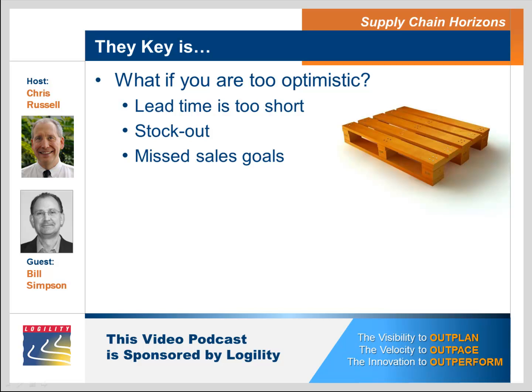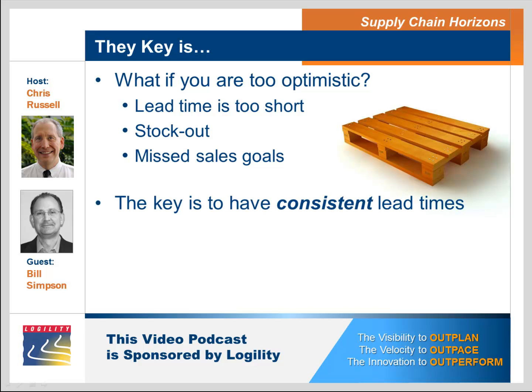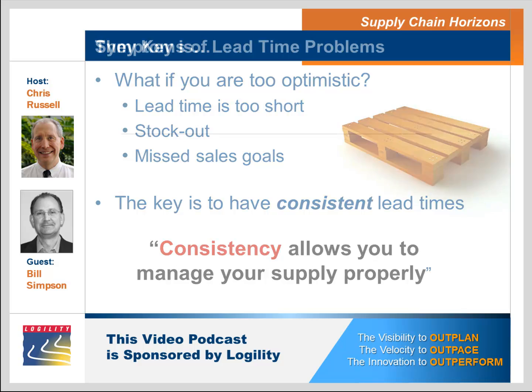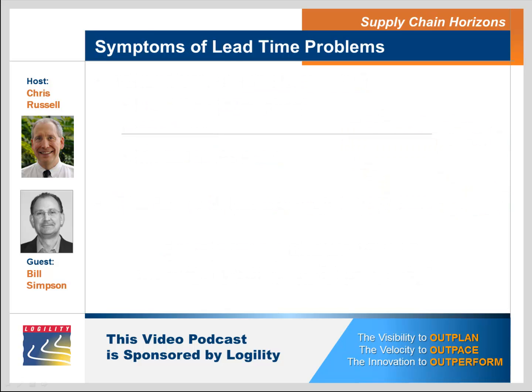What I try to talk to our clients about is that consistency is the optimal. It doesn't have to be the lowest lead time; it certainly doesn't have to be the highest lead time, but it has to be consistent. Once you have consistency, you can manage your supply properly. So when you walk into a company, what are some of the symptoms that you see that point to a problem with lead times, both schedule adherence in manufacturing and procurement lead times from vendors?